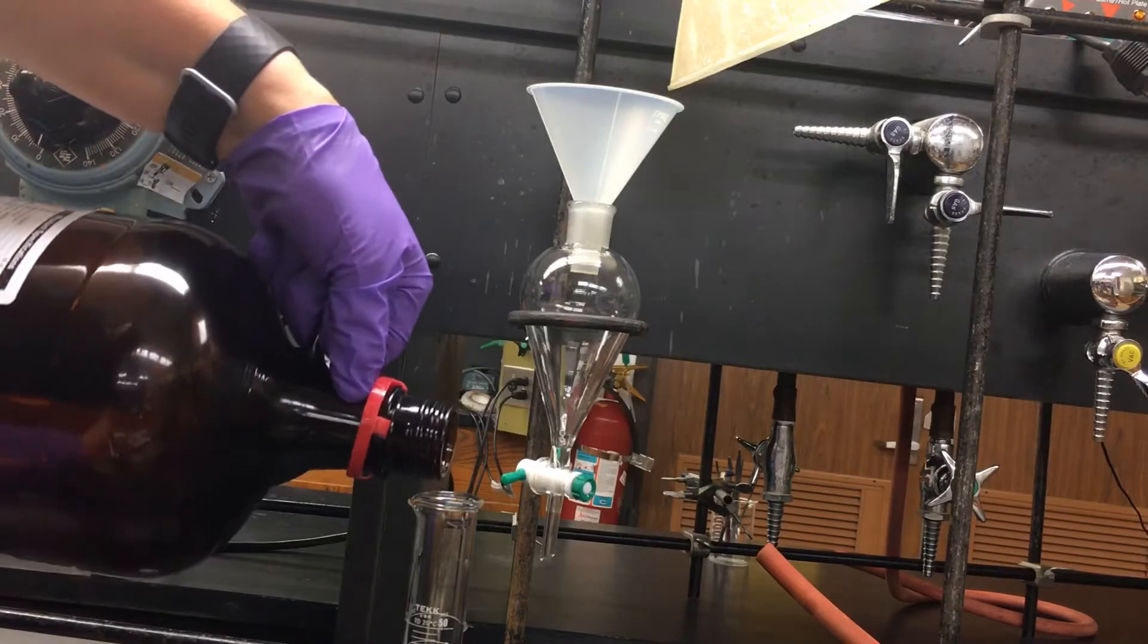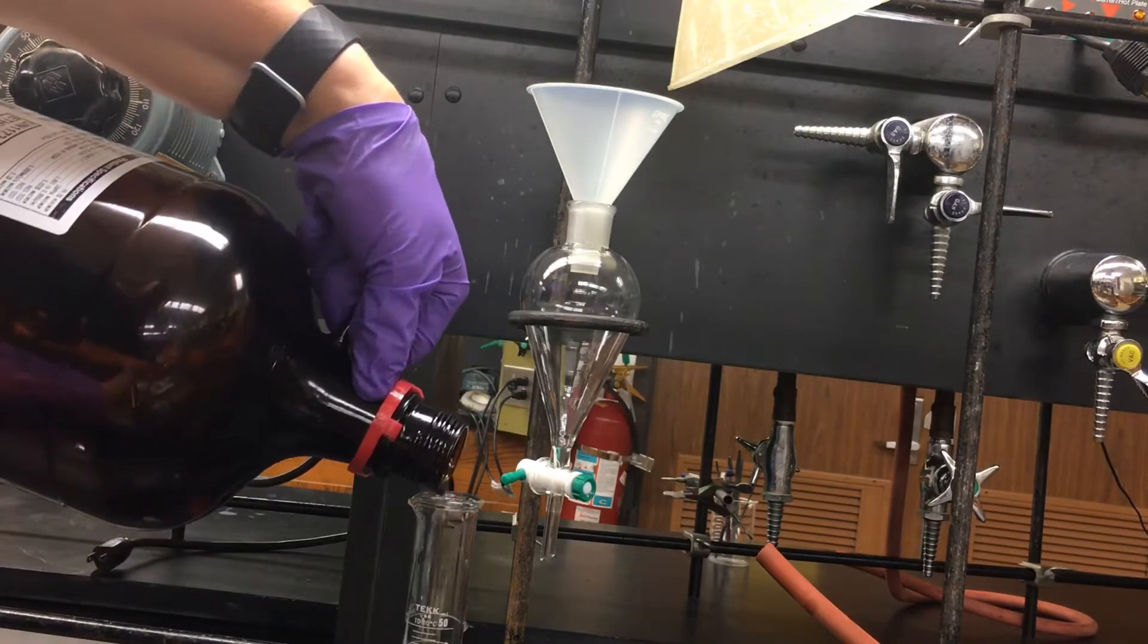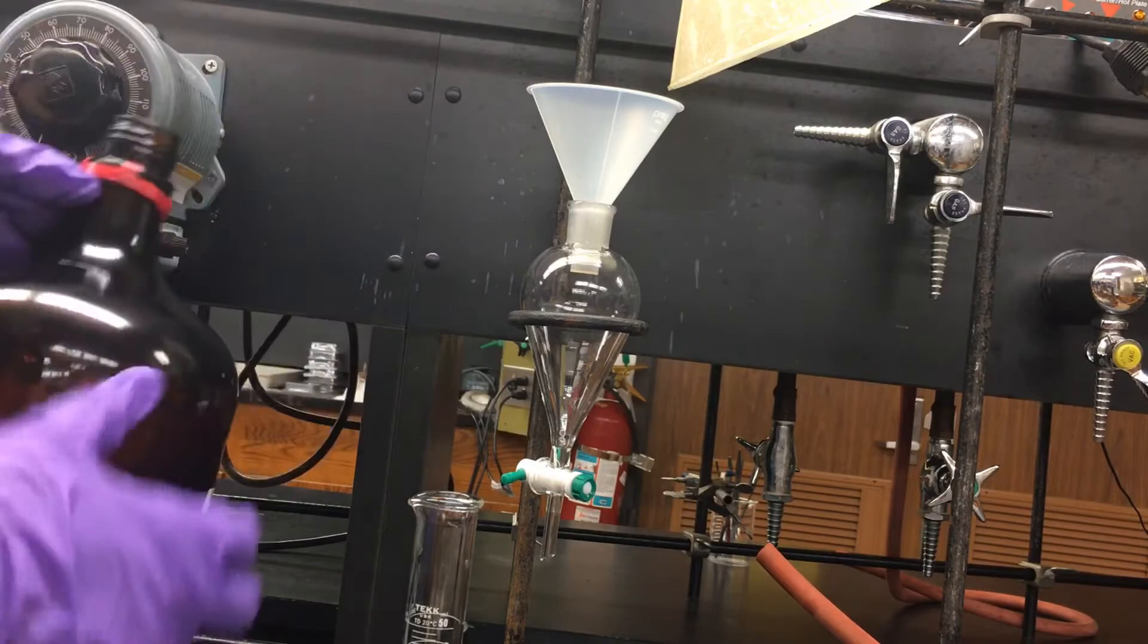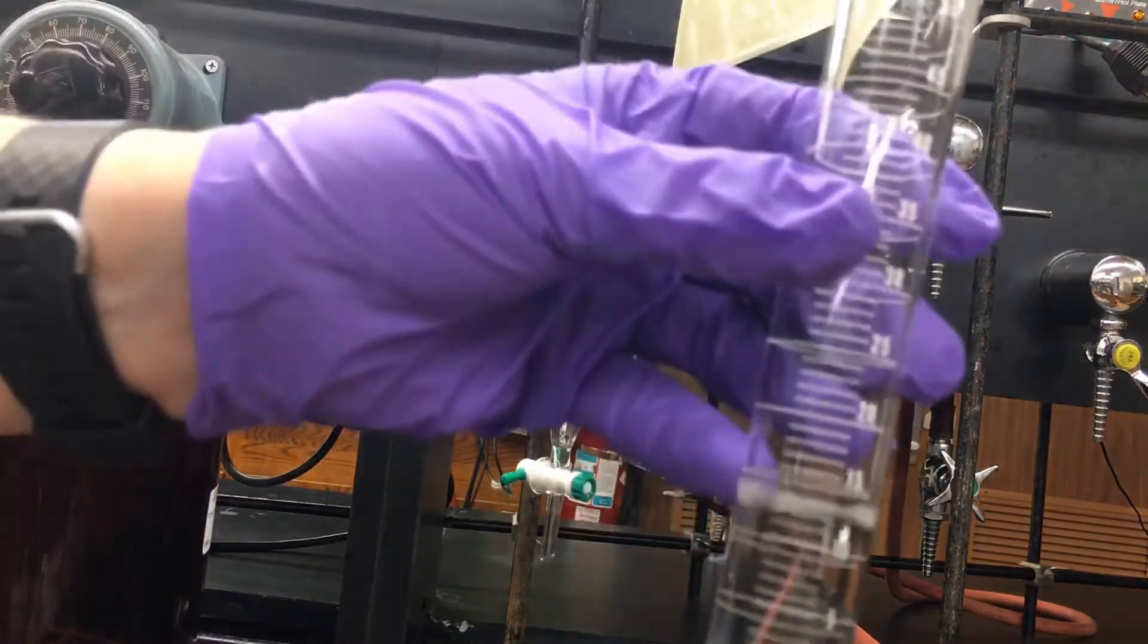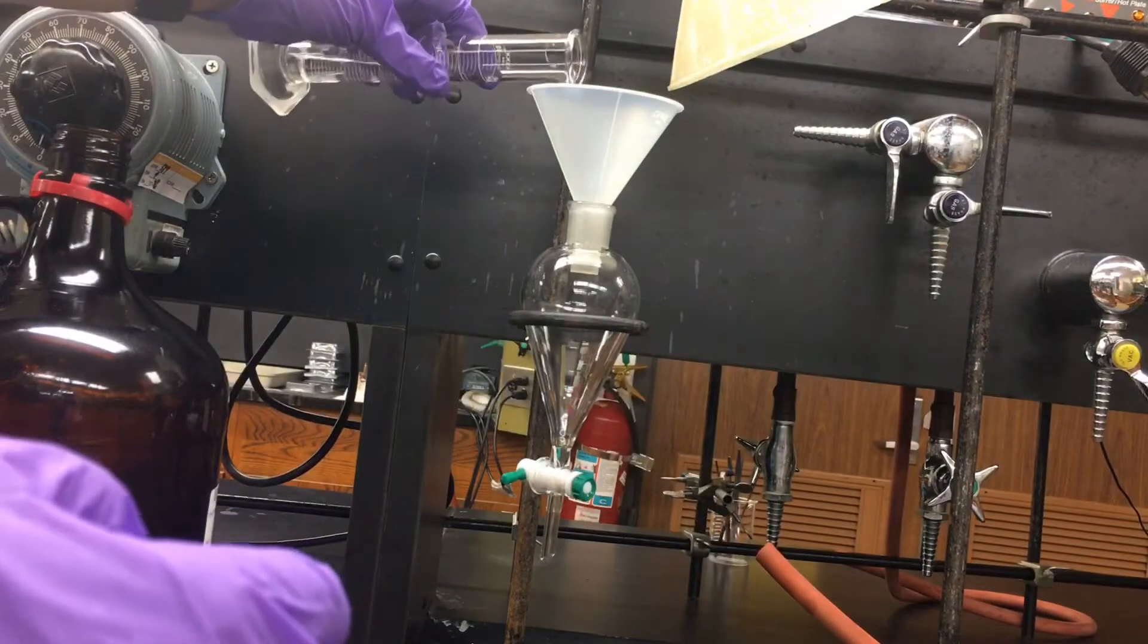I'm now measuring out 10 mils of ethyl acetate. This will be poured into the funnel from the top. You can see it's about 10 mils now.